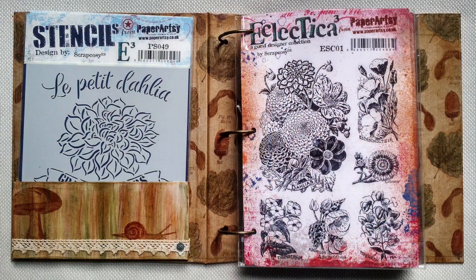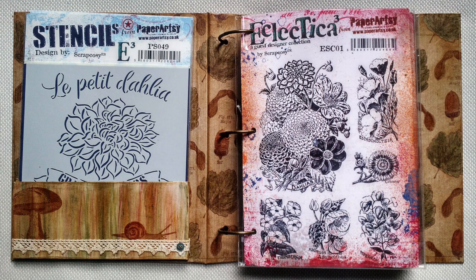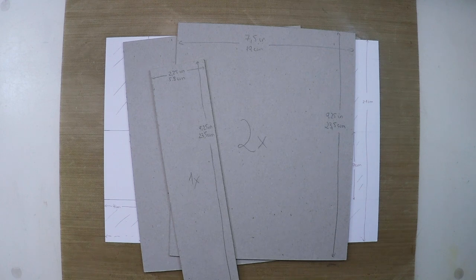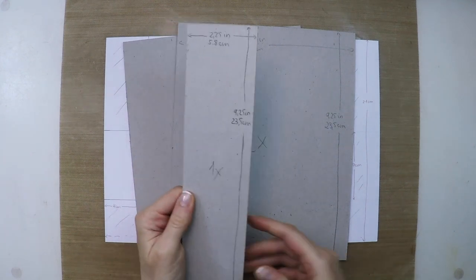And this is how they will fit all in, the stencils in the pocket and the stamps bound. Now let's start with the base. Here's what you need.